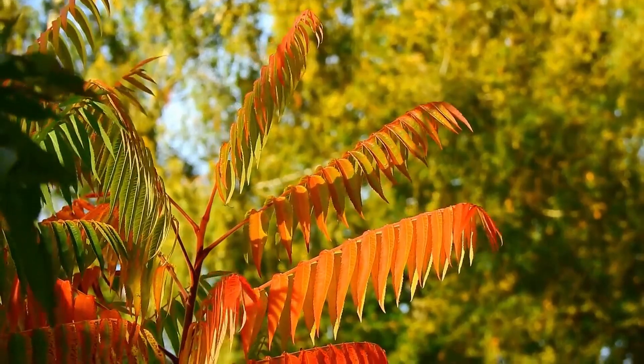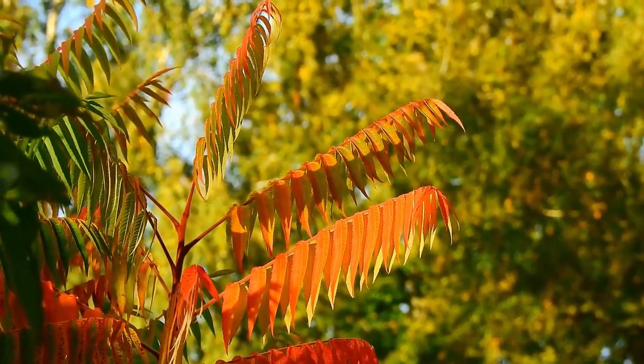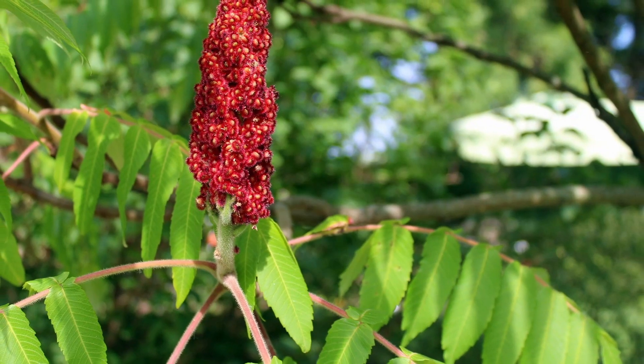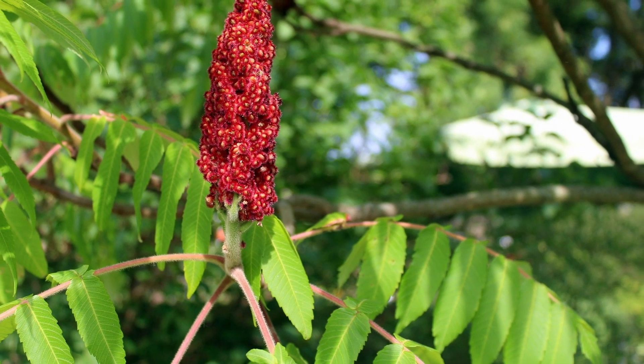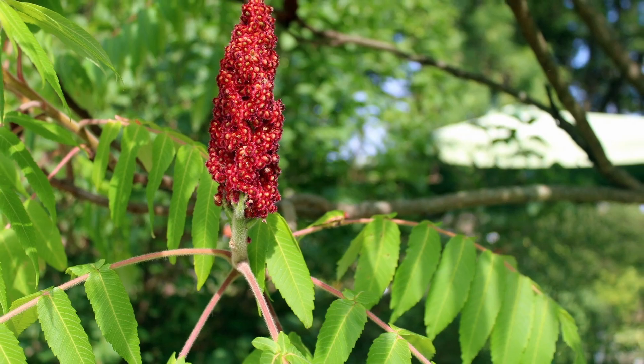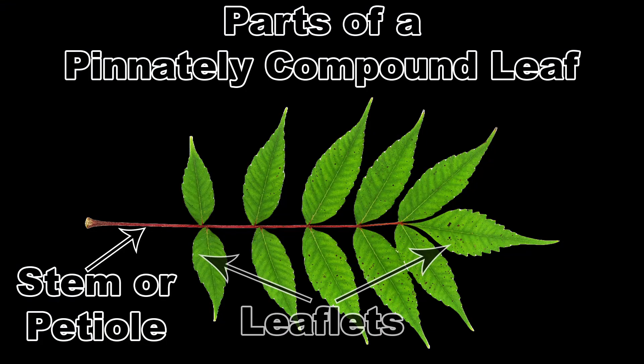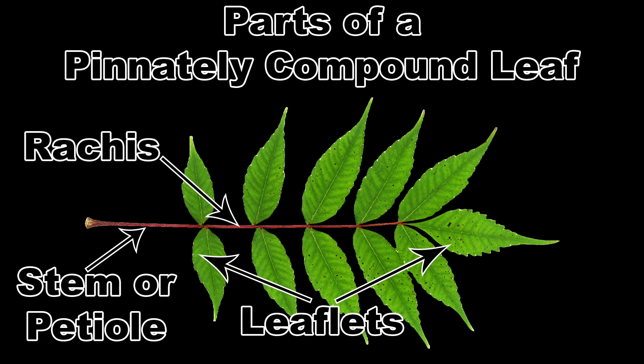Things are going to get a little bit crazier as we move into pinnately compound leaves. These leaves can get big, up to several feet long on some plants, and have a distinctive feather shape. For our example, we'll use the leaf of a very common North American shrub, the stag horned sumac. Pinnately compound leaves also have a petiole, but it doesn't run the entire length of the leaf like it appears to. From where the first leaflets start to where the last leaflet is connected, it is called the rachis.